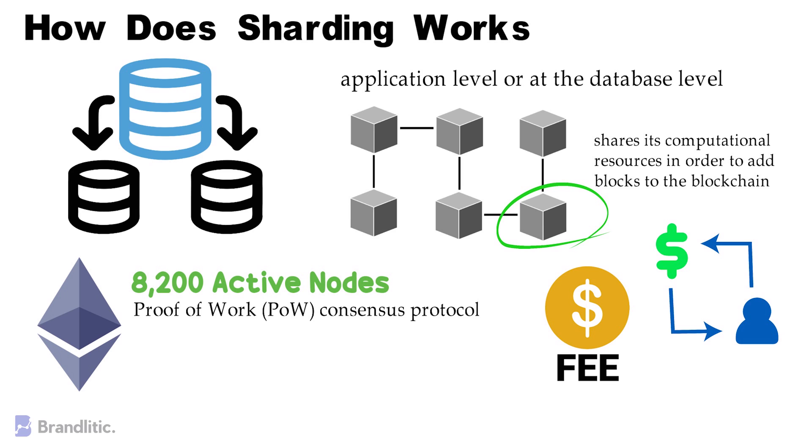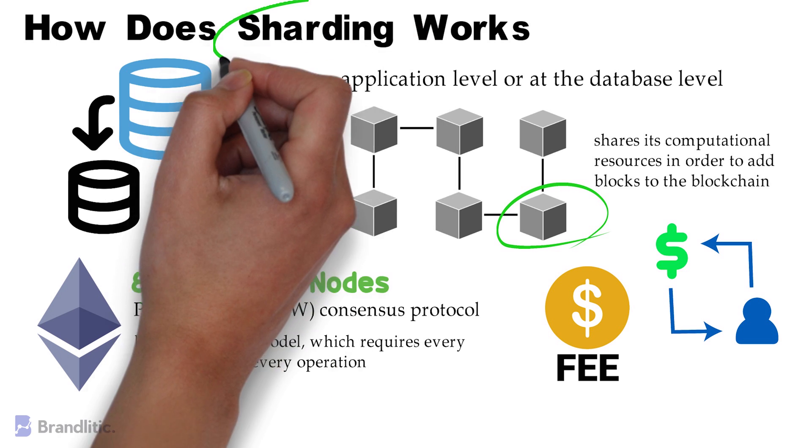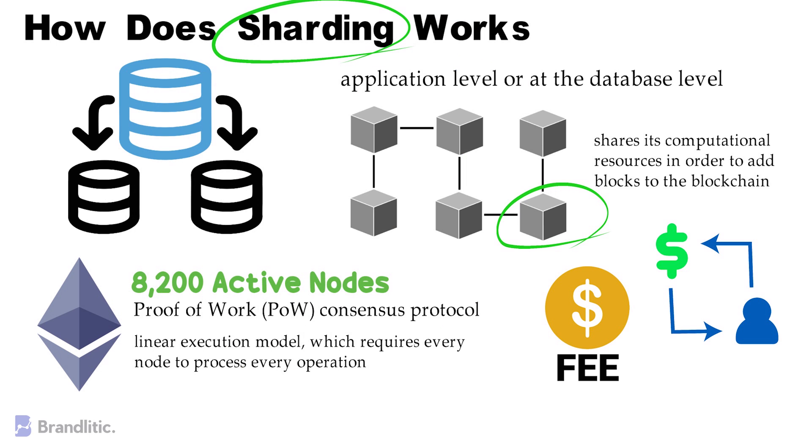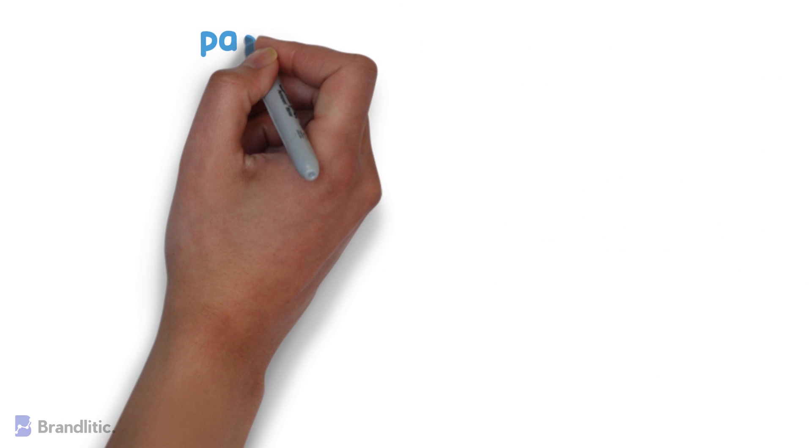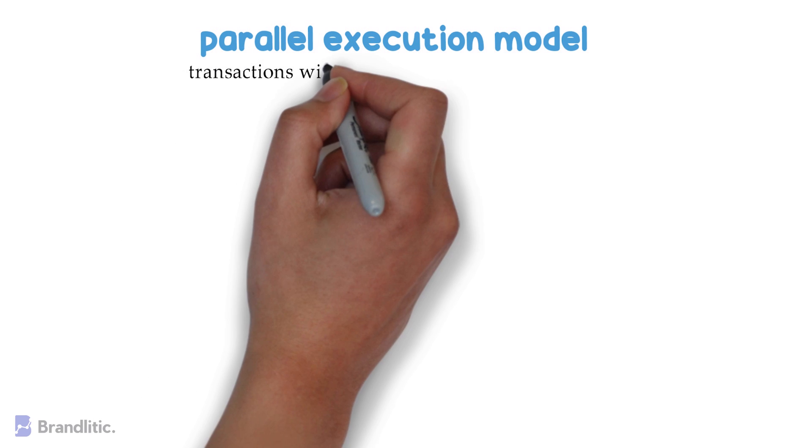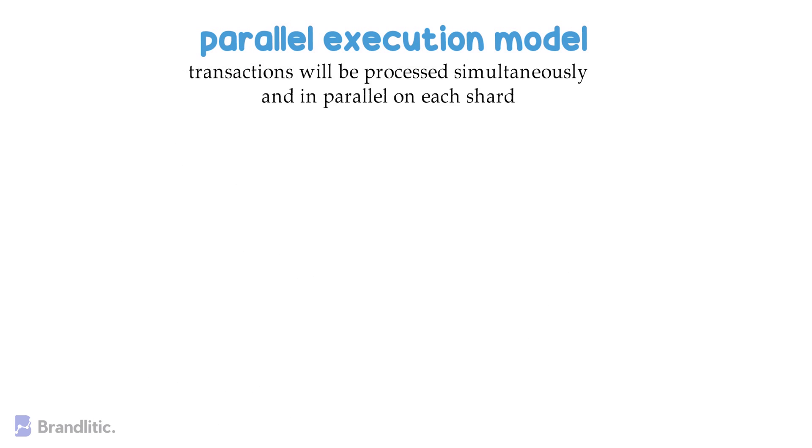Ethereum and many other blockchains currently follow the linear execution model which requires every node to process every operation. But here, sharding can come to the rescue. With sharding, the execution of transactions within a blockchain will follow a parallel execution model. This means that transactions will be processed simultaneously and in parallel on each shard, which will result in increased transaction throughput on the network.